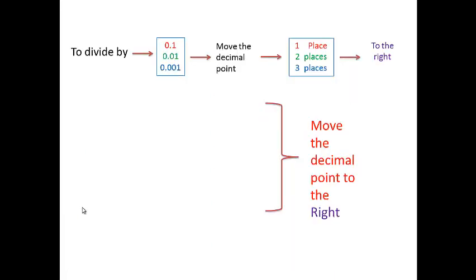Now, to divide by powers of 10 like 0.1, 0.01, and 0.001: dividing by 0.1 means move the decimal point one place to the right. Dividing by 0.01, move the decimal point two places to the right. Dividing by 0.001, move the decimal point three places to the right.